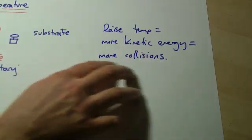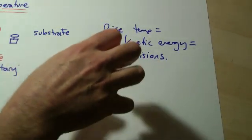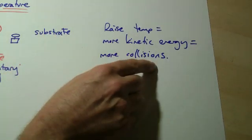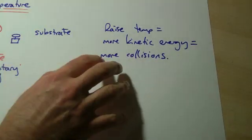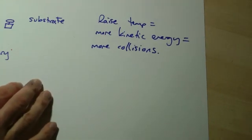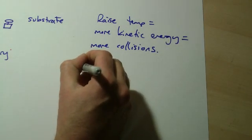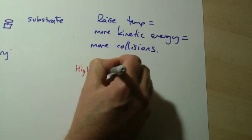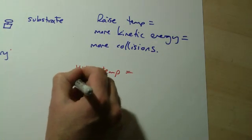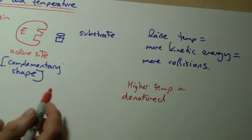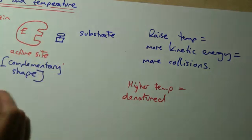We can keep increasing the temperature and we will get more and more collisions. Doesn't matter, even if we're doing it at a hundred degrees there will be more collisions. But we have the problem of higher temperatures where the enzyme is denatured. What denatured means is a change in the shape of the active site.